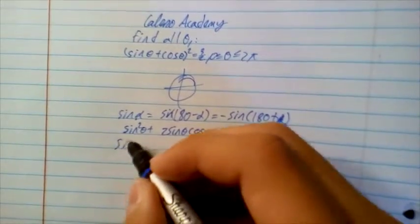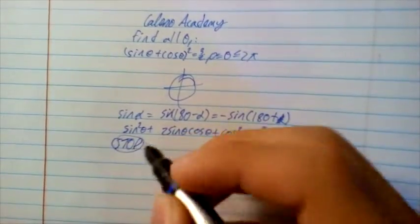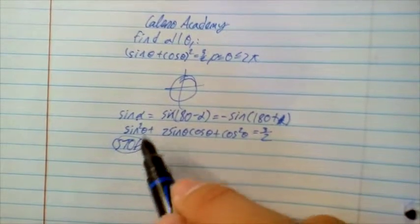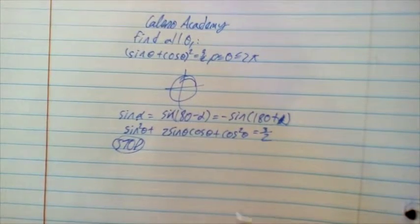Now, stop for a second. It seems obvious that we should make the substitution that 1 is equal to sin squared theta plus cos squared theta.